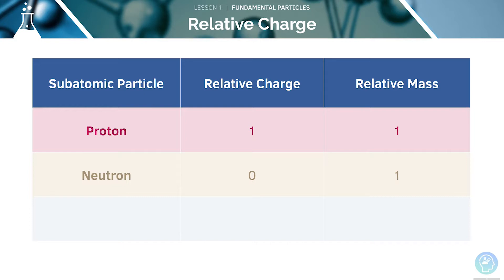Our last subatomic particle is the electron. The electron has a negative charge compared to the proton and neutron. It's actually the opposite, so it's minus one. The relative mass of the electron is negligible.